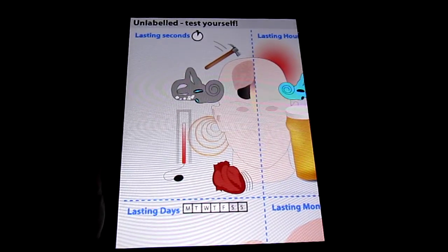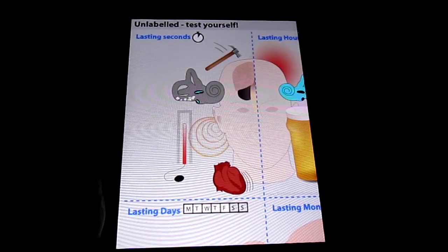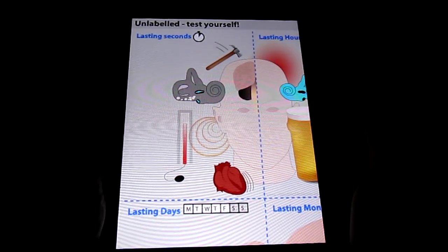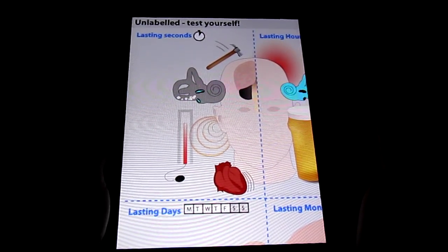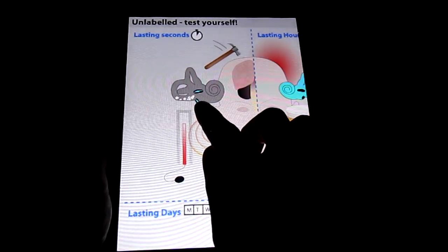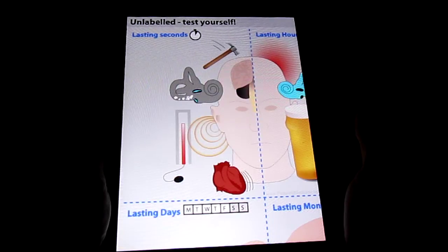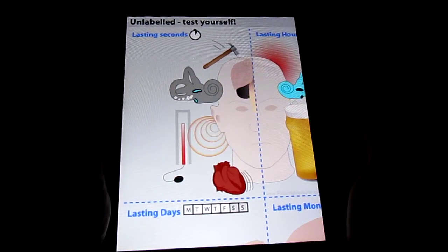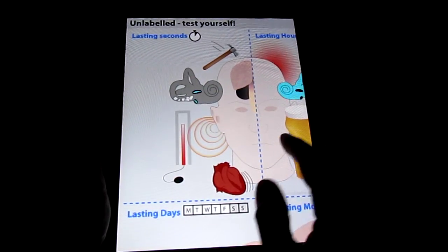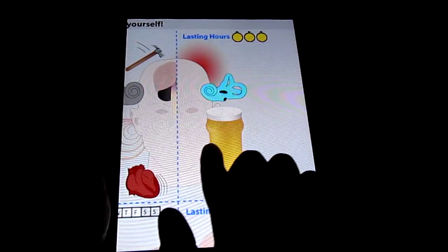TIAs, transient ischemic attacks affecting the cerebellum, and also perilymphatic fistulae—tears within the round or oval windows which cause a communication between the inner and outer ear. So those are the causes of vertigo lasting for just a few seconds.